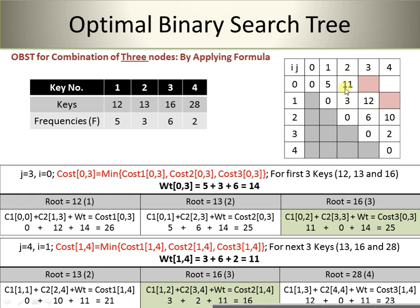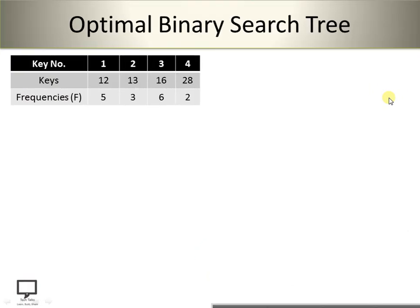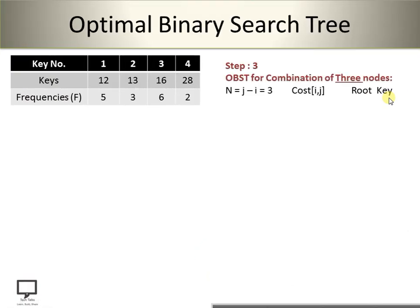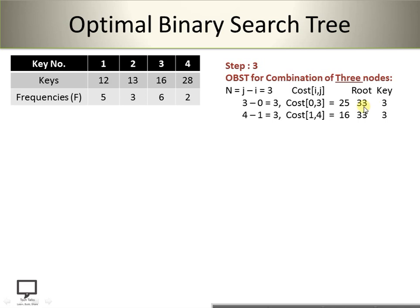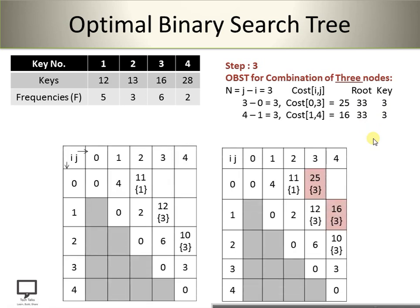Updating the cost matrix: cost(0,3) = 25 with root key number 3, and cost(1,4) = 16 with root key number 3. Note: the root node value should be 16 (key number 3), not 33 as mistakenly written. Both values are now placed in the cost matrix.